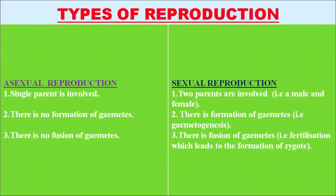Organisms reproduce by two modes: asexual and sexual reproduction. What is the difference between them? In asexual reproduction, a single parent is involved, but in sexual reproduction there are two parents — a male and a female. In asexual reproduction there is no formation of gametes, that is no gametogenesis, but in sexual reproduction there is formation of gametes. In asexual reproduction there is no fusion of gametes.